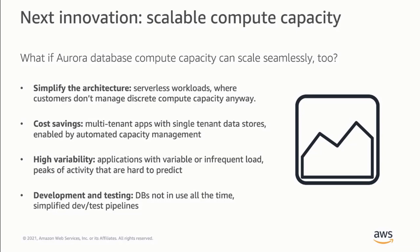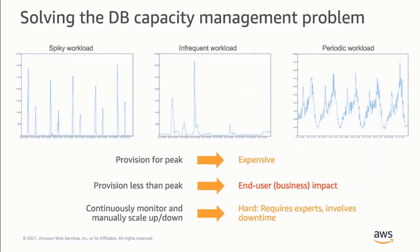Database engines are a highly complex state machine, which is why they are so hard to scale. Nevertheless, having an automatically scalable compute layer enables or optimizes a whole host of use cases: serverless workloads, software as a service workloads with single tenant data stores, workloads with high load variability or infrequent load, cost effective dev and test, just to name a few. We're essentially solving the capacity management problem. If you only have access to provisioned compute capacity, you either provision for peak — which is expensive — or you don't and risk brownouts, or you build complex automation to scale up and down, which is hard and involves downtime. This forces you to make a trade-off between cost and management burden.